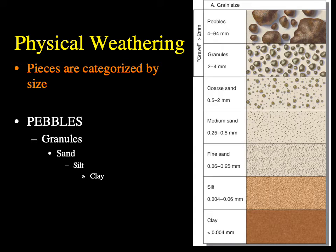Physical weathering breaks down rock into smaller and smaller pieces by some mechanical force. As these weathering processes break rock into smaller and smaller pieces, those pieces are categorized by size. A sediment with an average grain diameter between 4 and 64 millimeters would be called pebbles. The next size smaller — 2 to 4 millimeters average grain diameter — we call granules.